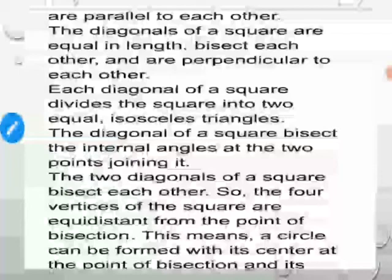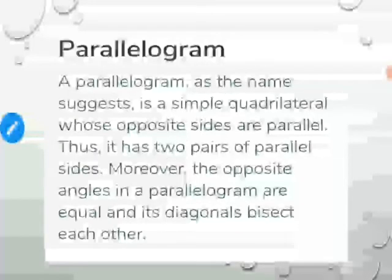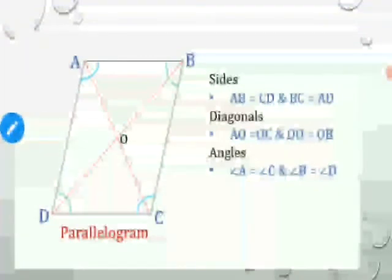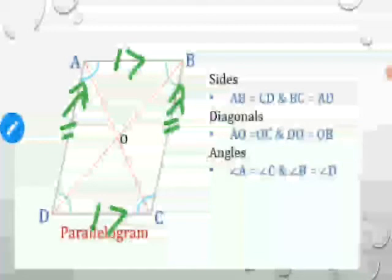A parallelogram, as the name suggests, is a simple quadrilateral whose opposite sides are parallel — thus it has two pairs of parallel sides. These opposite sides are also equal, and the diagonals bisect each other. With the help of a figure: two pairs of opposite sides are equal and parallel — this side equals that side, and they are parallel to each other.